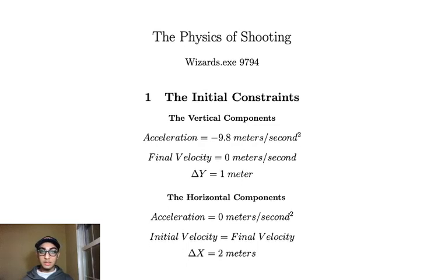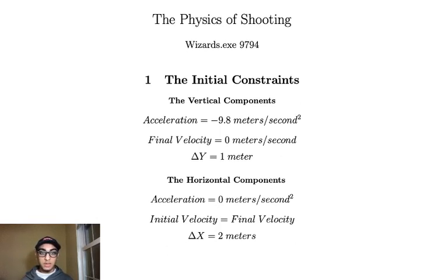The final thing is we're going to be assuming that everyone has at least an algebra 2 knowledge with little to no knowledge of physics. So I'm going to start off by talking about the initial constraints. In the vertical components, we're going to say that acceleration is negative 9.8 meters per second squared. That's from gravity. The final velocity is going to be 0 meters per second, which I'll touch on again later. And our delta y, our displacement in the y direction, is 1 meter, so we're going to be shooting the ring 1 meter high.